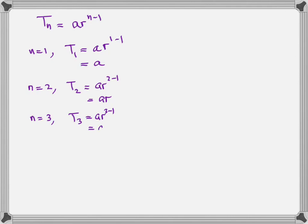When n equals 4, what do you think T4 would be? T4 would be Ar cubed, and so on. Now, what is the pattern that you are observing? The pattern is: whatever the value of n, the power of r is always one less.